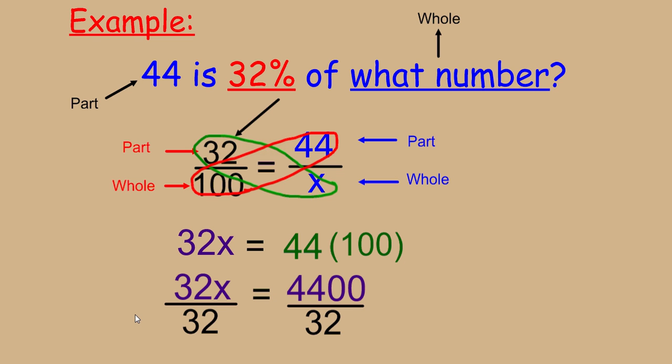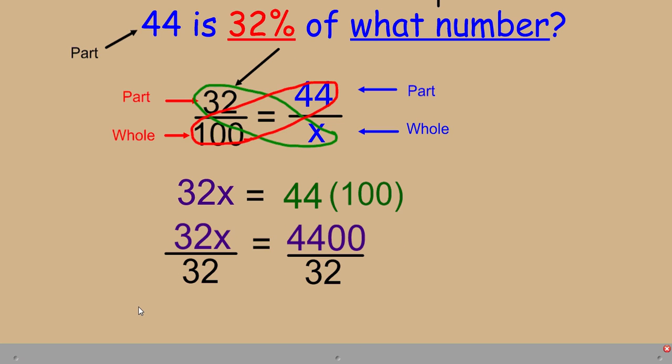You'll notice both sides are being divided by 32. We divide both sides by the same value. Thanks to our division property of equality, it will not change the value of either side. It's just going to help us to isolate the variable all by itself and get the answer 137.5, because 4,400 divided by 32 is equal to 137.5.